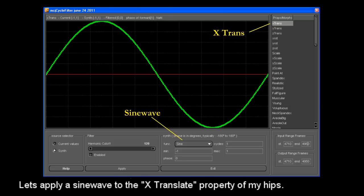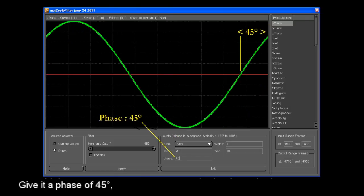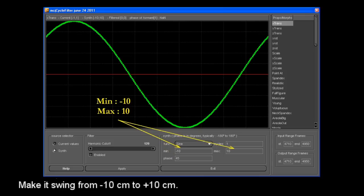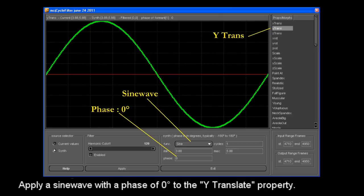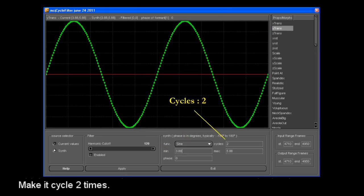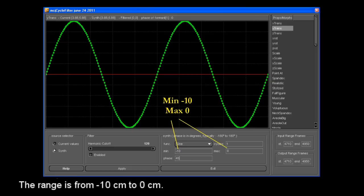Let's apply a sine wave to the X translate property of my hips and give it a phase of 45 degrees, make it swing from minus 10 cm to plus 10 cm. We apply a sine wave with a phase of 0 degrees to the Y translate property and make it cycle two times.